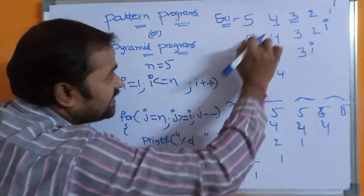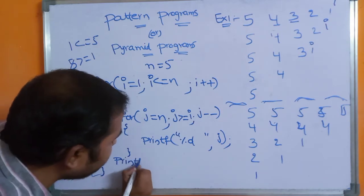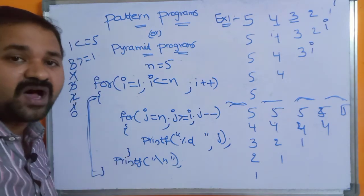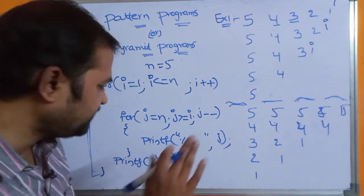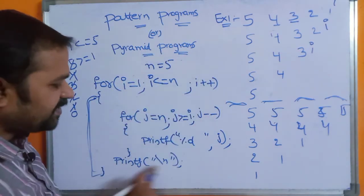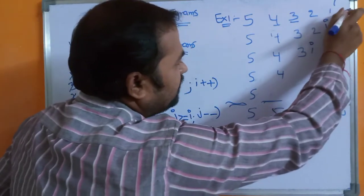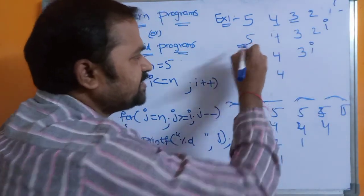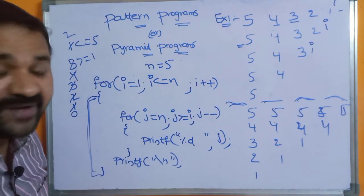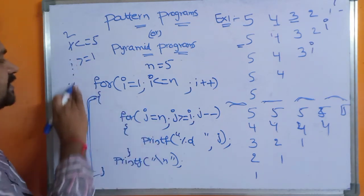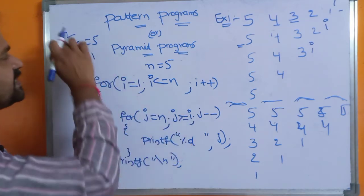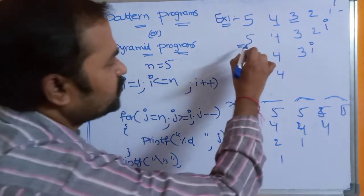After the inner loop exits, we print a newline (\n) to move the cursor to a new line — in C we use printf, in C++ we use cout, in Java System.out.println. Then i++ makes i=2; 2<=5 is true. j resets to N=5; 5>=2 is true, so 5 is printed. Decrement continues: 4>=2, 3>=2, 2>=2 all print. j becomes 1; 1>=2 is false, so the inner loop exits and newline is printed.